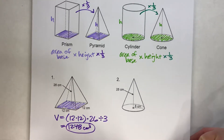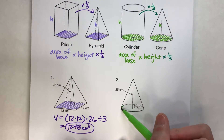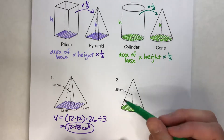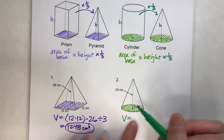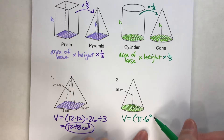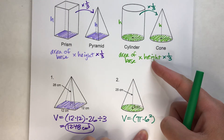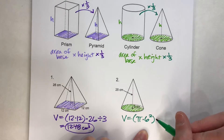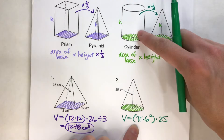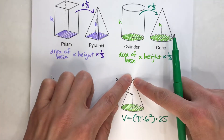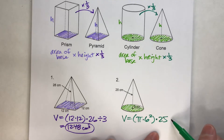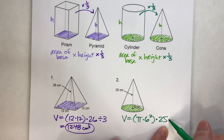Now for the cone: the base of a cone is always a circle. So we start with the area of the base — pi times the radius squared — then multiply by the height, which in this case is 25. That would give you the volume of a cylinder with those dimensions, but because this is a cone, we know it's a third of the volume of a cylinder.